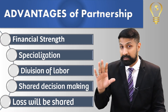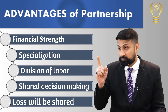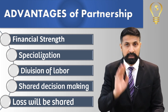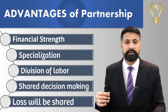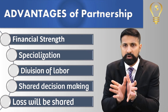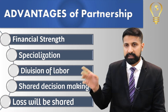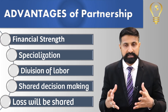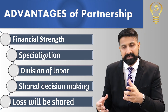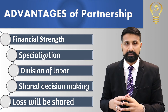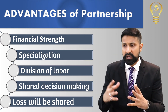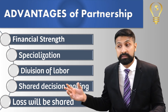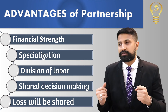Specialization ایک اور advantage ہے — جو partner آ رہا ہے اسے کچھ نہ کچھ تو آتا ہے۔ مثلاً دو تین دوست مل کے business شروع کریں: ایک website میں اچھا ہے، ایک marketing میں، ایک finance میں — ہر کوئی اپنے area میں کام کرے۔ Division of labor بھی اسی طرح کام کو divide کر دیتے ہیں۔ Shared decision making بھی ایک advantage ہے — سب کا input آ جاتا ہے، سب کے perspectives آتے ہیں، اور decision strong ہو جاتا ہے۔